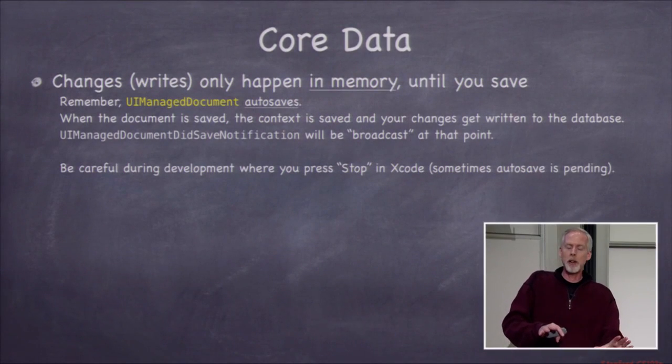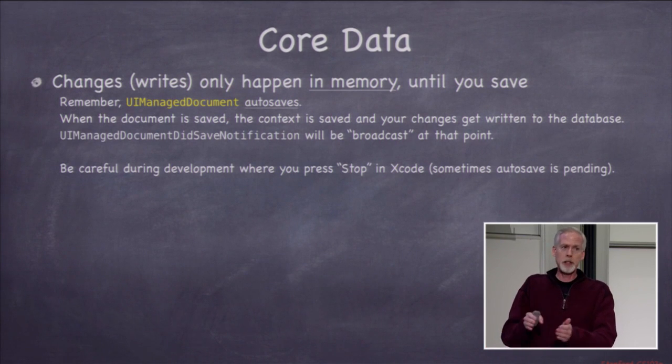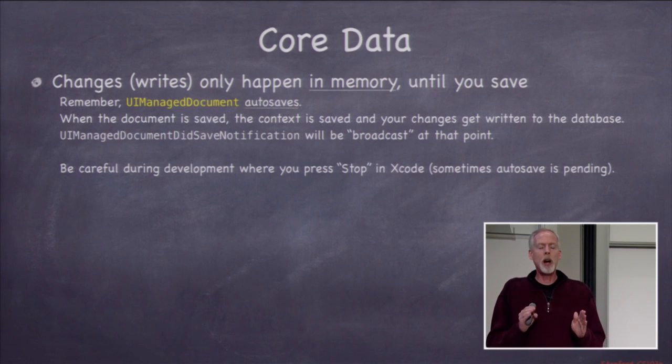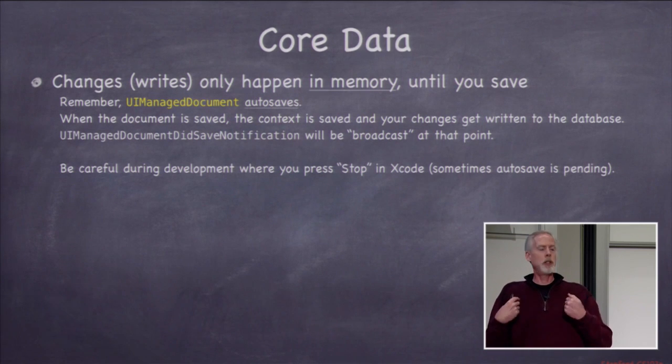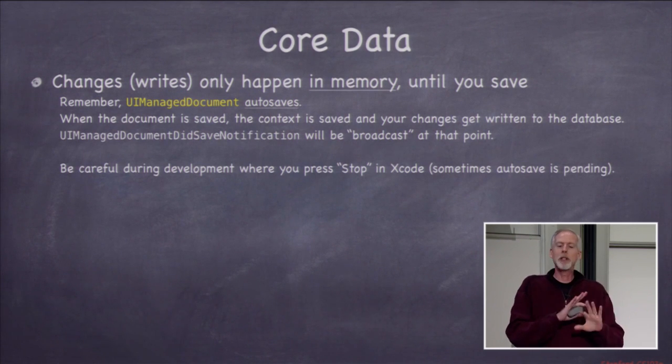Calling valueForKey and setValue:forKey: results in ugly, non-type-checked code with a lot of literal strings. If you ever change a property name in your visual map, all your code would silently stop working. What we really want is properties with dot notation. To do that, we create subclasses for Photo and Photographer — subclasses of NSManagedObject. Xcode will generate those for you.